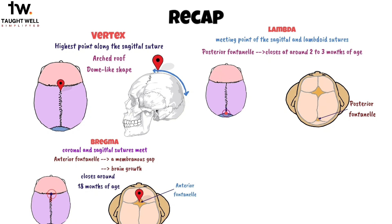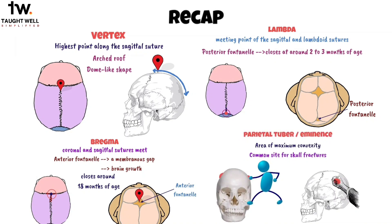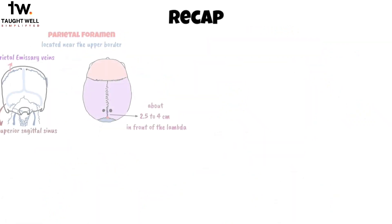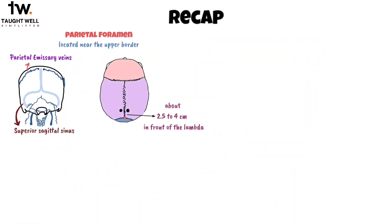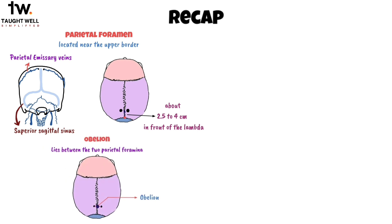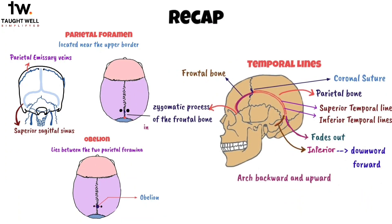The parietal tuber or eminence is the area of maximum convexity on the parietal bone and is prone to skull fractures. Each side of the skull has a parietal foramen near the upper border, allowing an emissary vein to enter the superior sagittal sinus. The obelion marks the point between the two parietal foramina on the sagittal suture. Finally, the temporal lines start at the zygomatic process of the frontal bone, arching backward and upward, crossing the frontal bone, the coronal suture, and the parietal bone. Over the parietal bone, there are two lines — superior and inferior — which fuse into a single line when traced forward, but continue downward and forward when traced backward.